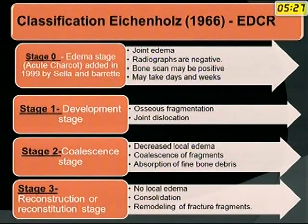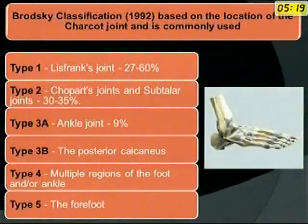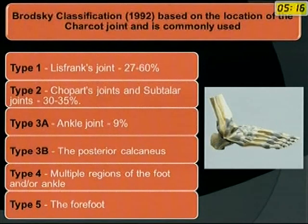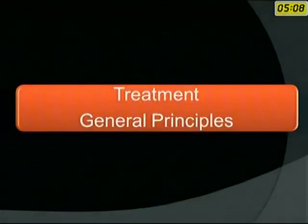As per the Eichenholtz classification, it goes from stage 0 to stage 3: edema, developmental stage, coalescence stage, and reconstruction stage. In the Brodsky classification, it is type-based on the location of the Charcot joint — Lisfranc's joint, Chopart's joint, ankle joint, posterior calcaneum, multiple regions of the foot and ankle, and the forefoot.